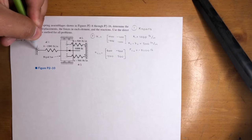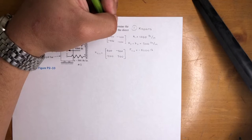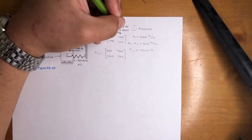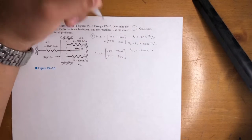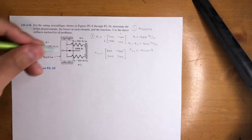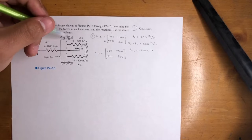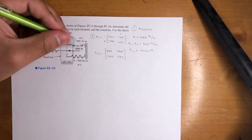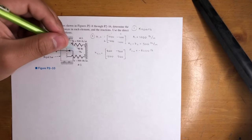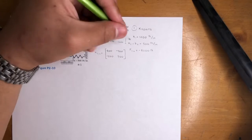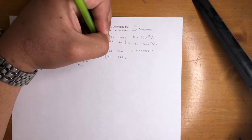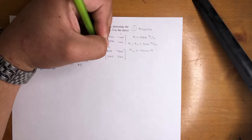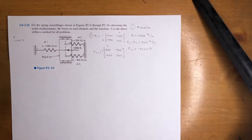K1 is between nodes one and two, so we're going to put one, two, one, two. This one is between nodes two and three, and then two and four. So let's go ahead and put two here and two here, but three and four, three and four.